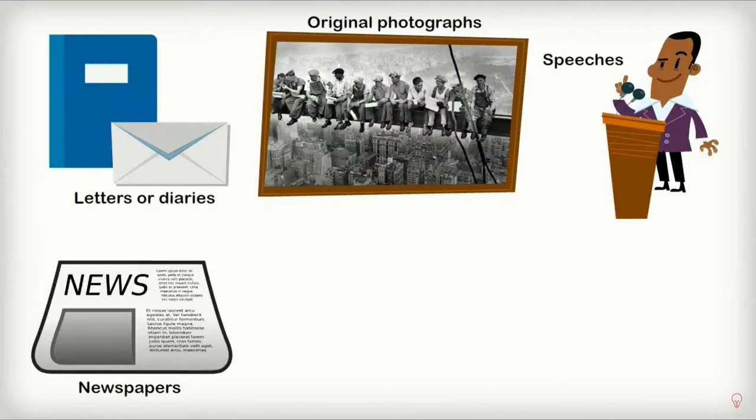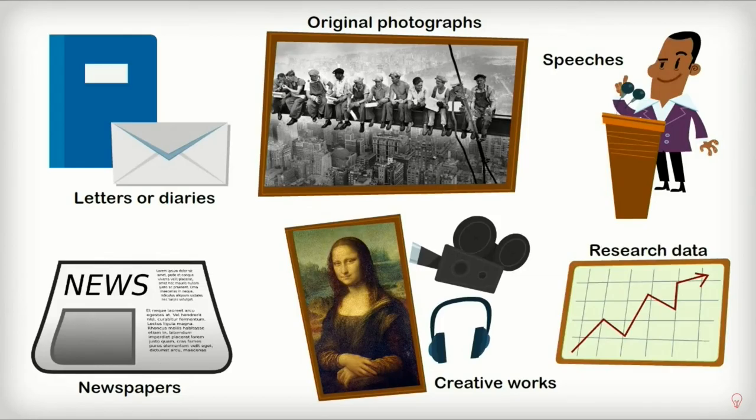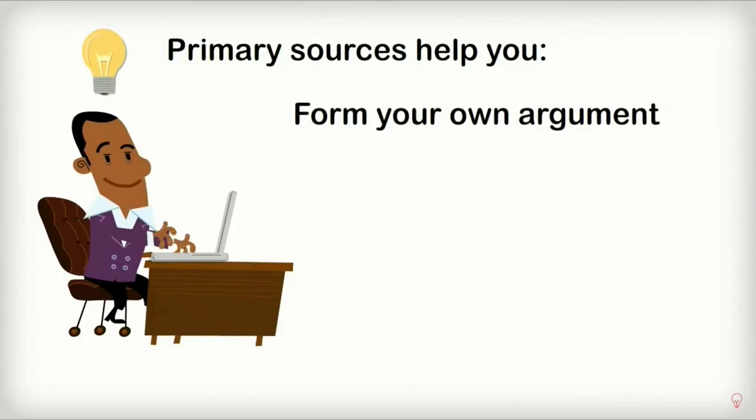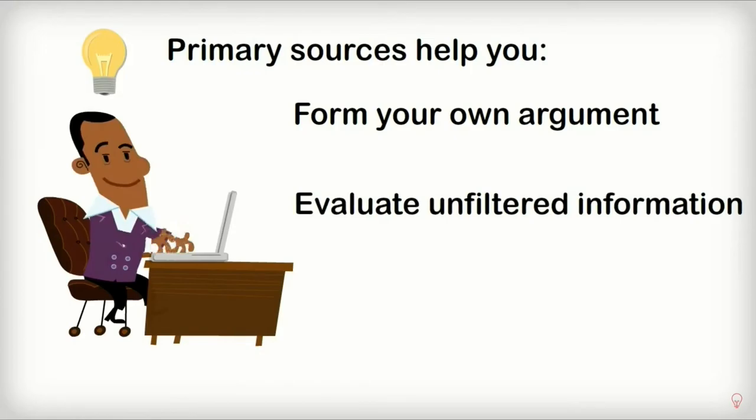Examples of primary sources include things like letters or personal diaries or journals, original photographs, speeches, newspaper reports, creative works like paintings, plays, and music, and research data or surveys. It's a good idea to use primary sources in research papers, because it allows you to form your own argument to defend your thesis, since the information you're using is unfiltered by another person's point of view. You're able to critique an original work using your own ideas.